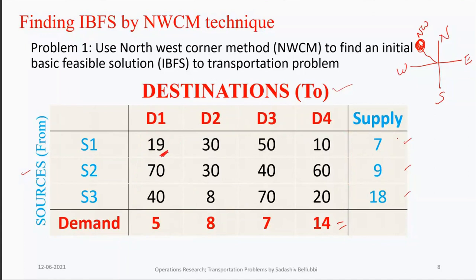For the northwest corner cell, the supply in row S1 is 7 and the demand in column D1 is 5. We can only allocate the minimum, which is 5. After allocating 5, the demand D1 becomes 0 and the remaining supply is 2. Since D1 is satisfied, we cancel that column and move on.